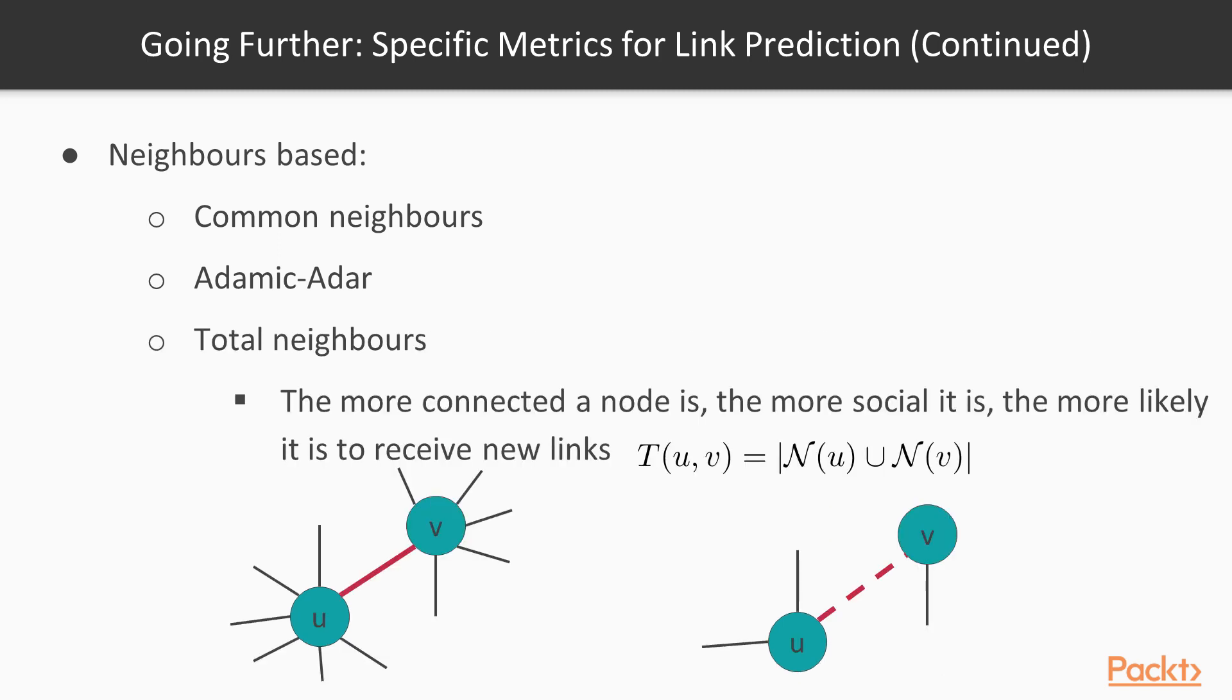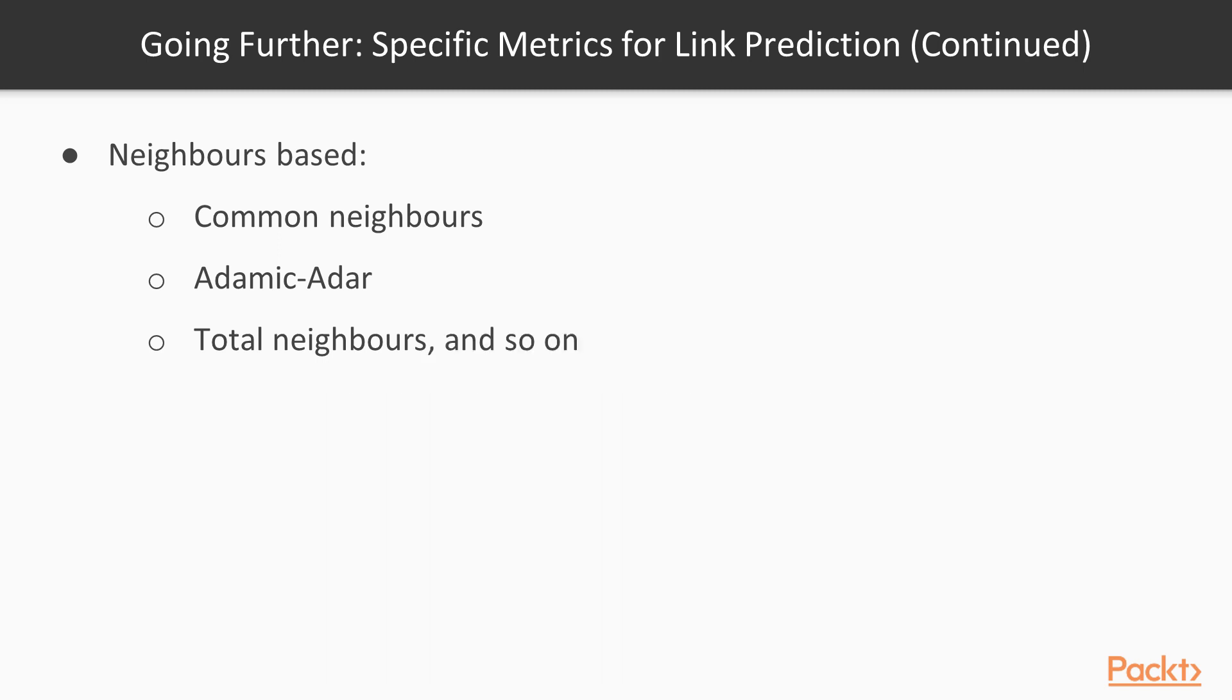Another example is the number of neighbors of each node. Since we can assume that a node with already a high number of connections is more social and hence is more likely to accept new connections.